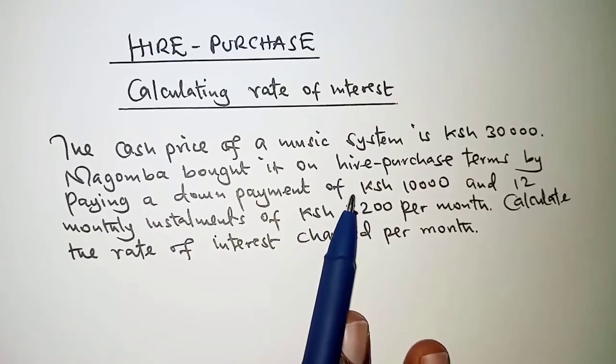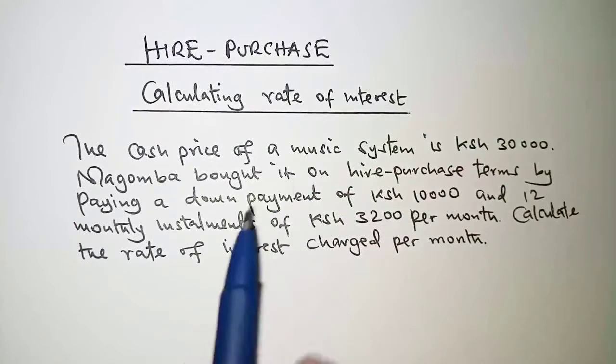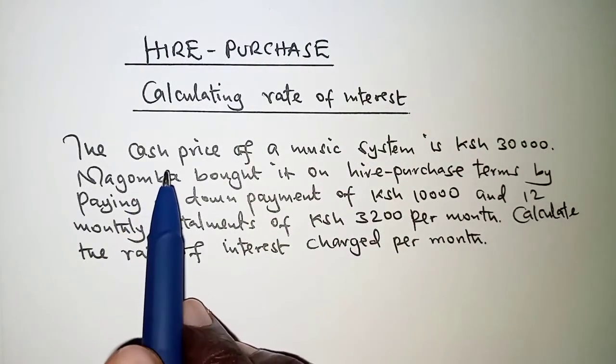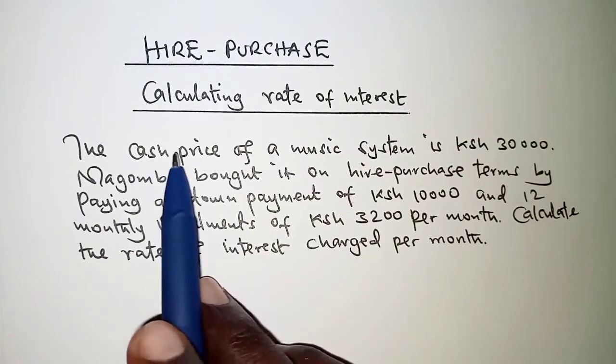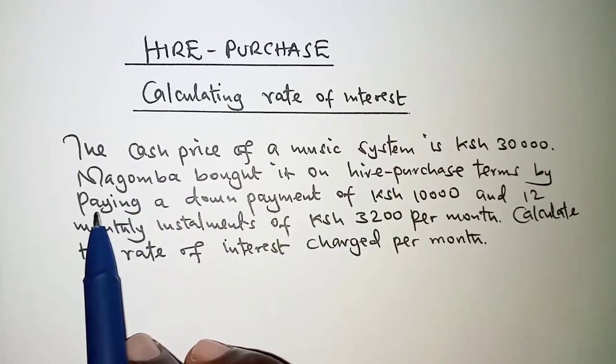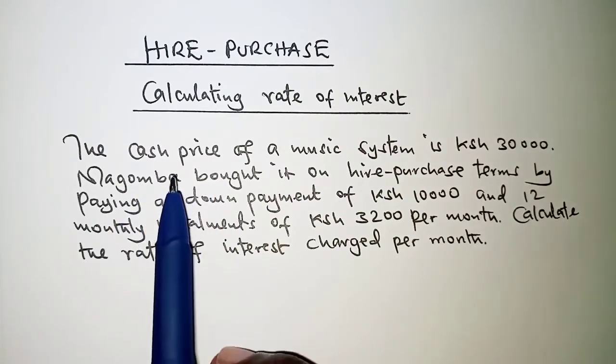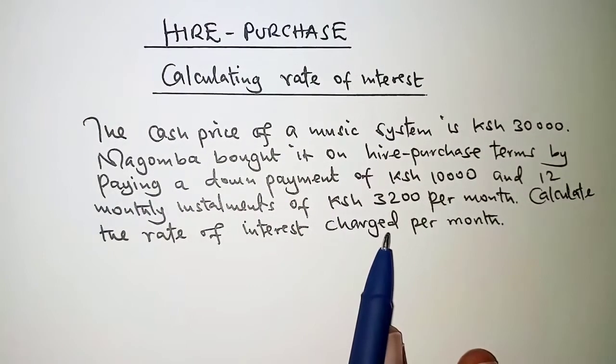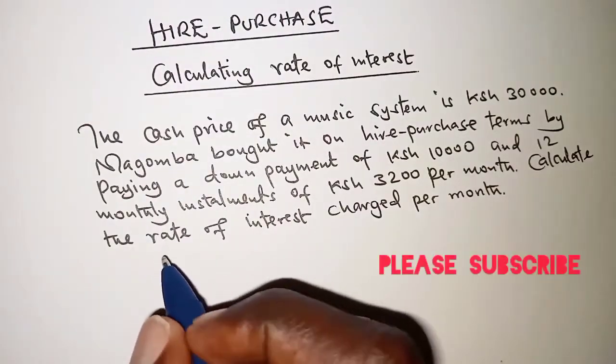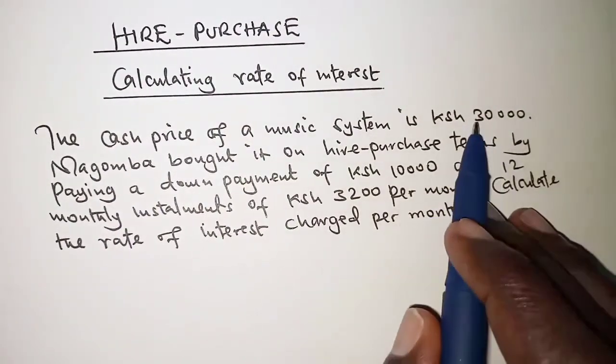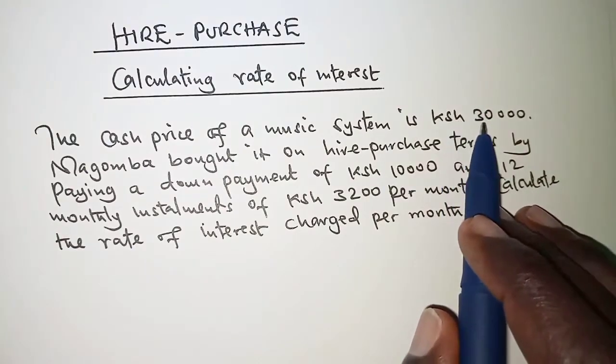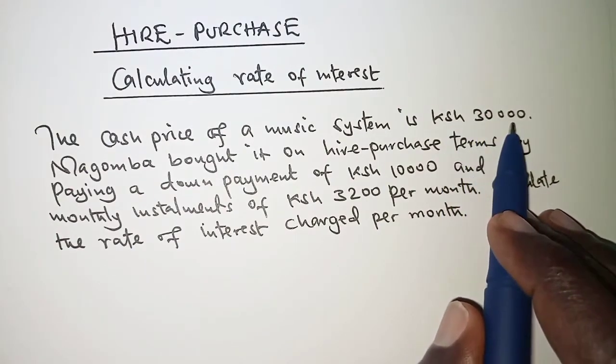So in this question, remember Mr. Magomba had two options: either pay cash or hire purchase. So he opts to pay on hire purchase. So the amount that was supposed to be paid originally, that is the cash price, is 30,000 Kenyan shillings.